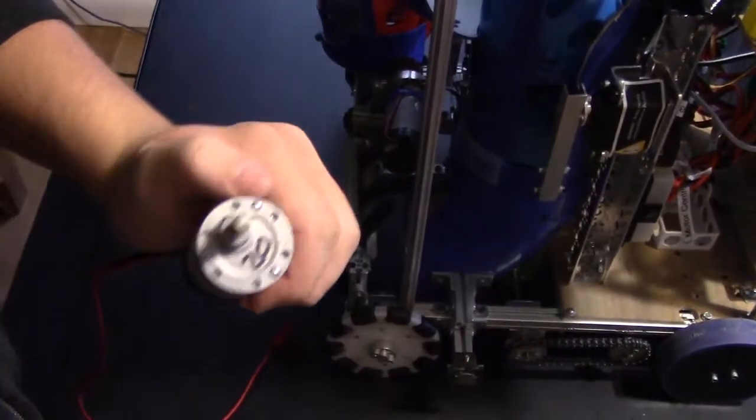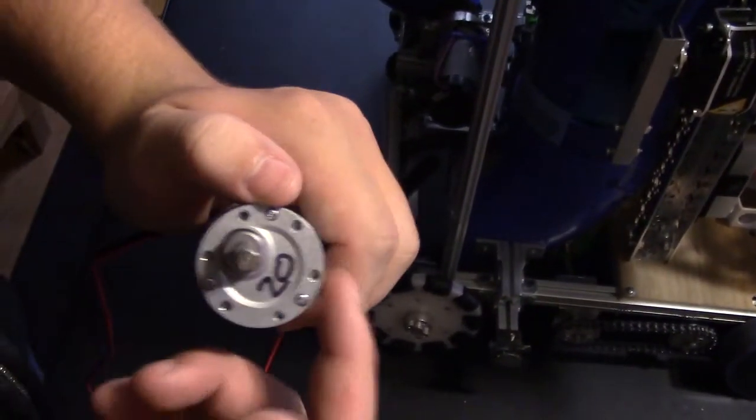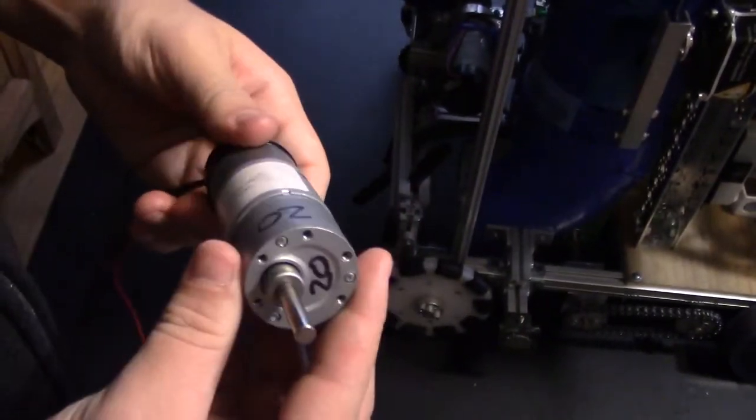In our second season, which is Velocity Vortex, we decided to face mount our motors, which is placing screws through something directly onto the mounting holes of your motor.